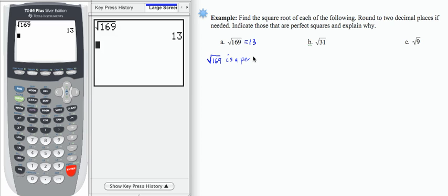The reason for that is that its square root is a whole number. So the square root of 169 is a perfect square because the result is a whole number. That's how we determine if we have a perfect square.